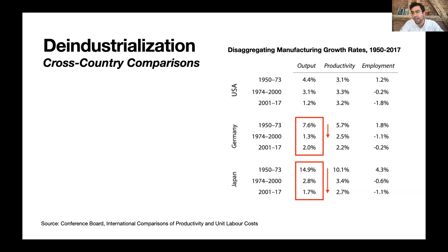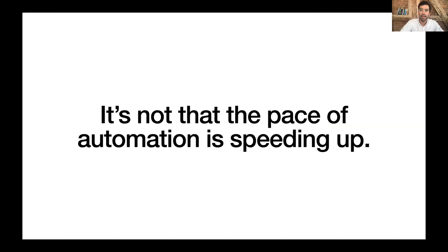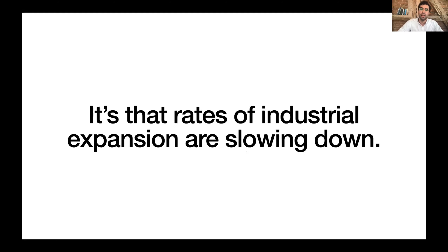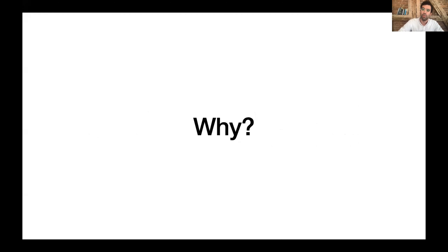What's the pattern that explains deindustrialization in Germany and Japan? Once again, it's a pattern of long-term decline in output growth rates — an output-led process. It's not the pace of automation speeding up that's causing this trend; it's rather that rates of industrial expansion are slowing down.